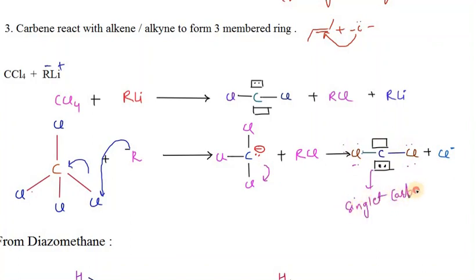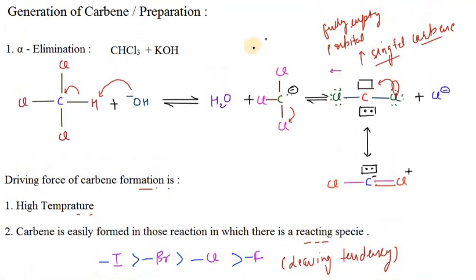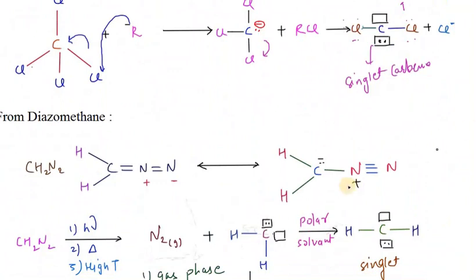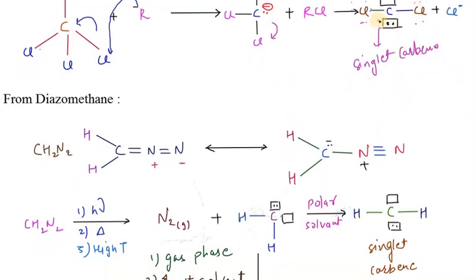We get singlet carbene again from the CCl4 + RLi method because of backbonding. When the outer atom donates its lone pair to the central atom, it is categorized as backbonding. In the case of backbonding, carbon needs a fully empty P orbital to accept those electrons — that is why we get a singlet carbene. This is an sp2-hybridized carbene where both electrons are in the same orbital, as seen in the introduction to carbene.